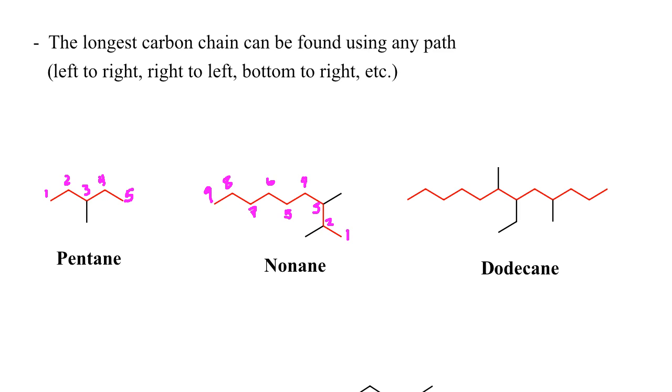Notice that it would not be appropriate if I were to start here. It would be 1, 2, 3, 4, 5, 6, 7, 8. So you're missing out on a carbon if you were to start at that portion there. You need to make sure that you're getting the most amount of carbons that you can in that parent chain.